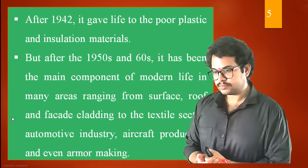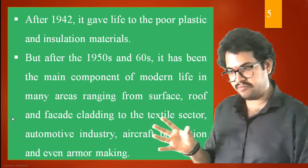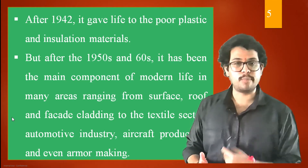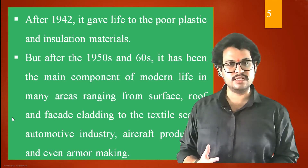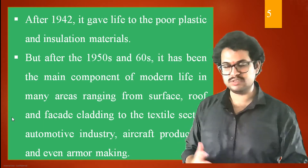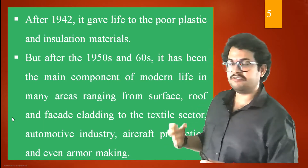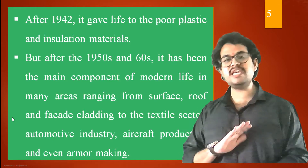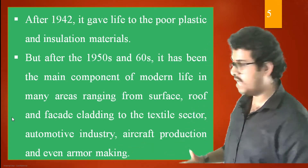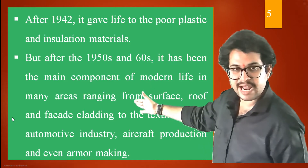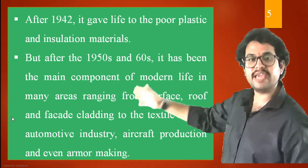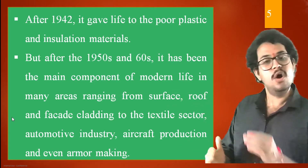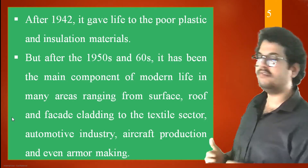After 1942, when the first composite material was actually used, very cheap plastic and insulation materials were brought into the limelight because they were very rapidly used. After the 1950s and 60s, fiberglass became the main component of modern life in many areas — such as surface cladding, roof cladding, facade cladding, textiles, automotive industries, aircraft production, and even armor making.